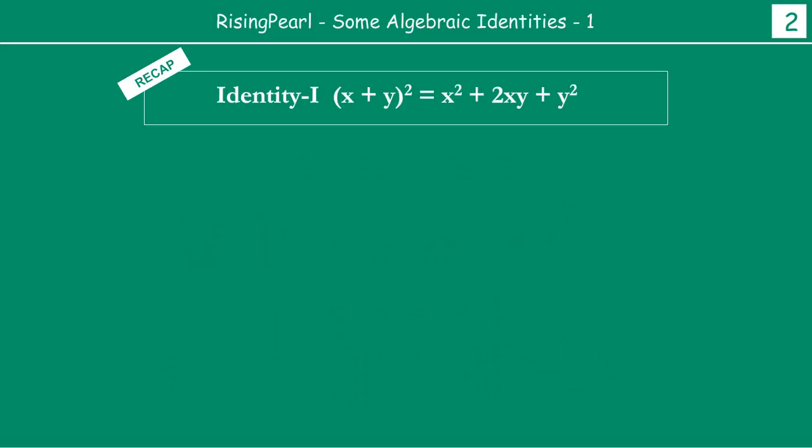Now, the first identity, friends, is actually the one we just talked about. So we are calling it a recap because we have learnt all of this in our earlier classes. So the identity one is x plus y whole square is equal to x square plus 2xy plus y square. So now this is basically always true, friends. So now, suppose if you are given a question